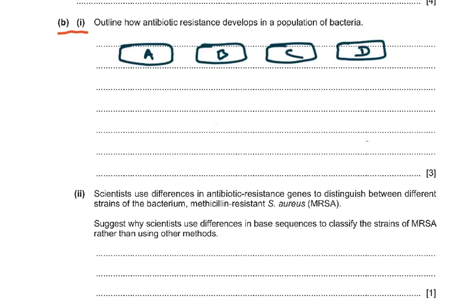First, understand that there are different types of bacteria — there is variation in the bacteria. Mutations are very common in bacteria, so some mutations have occurred resulting in bacteria all being different from each other. When mutations occur they give bacteria an advantage. Non-resistant bacteria are killed, while resistant bacteria — which will not be killed by the antibiotic — will reproduce and pass on the gene or allele for resistance. This process is called natural selection.